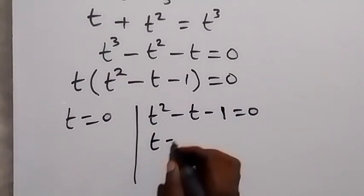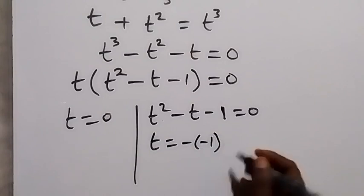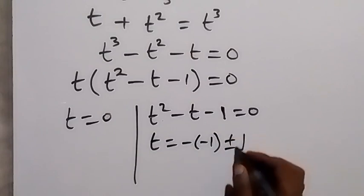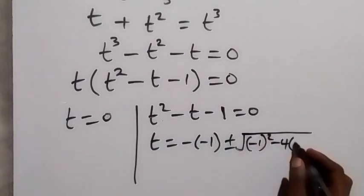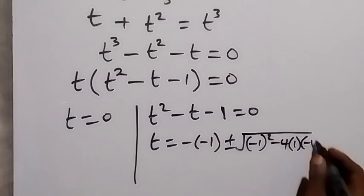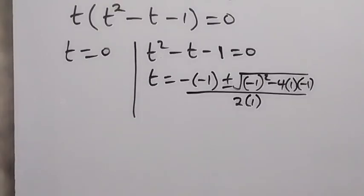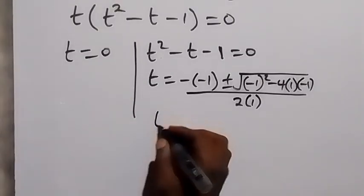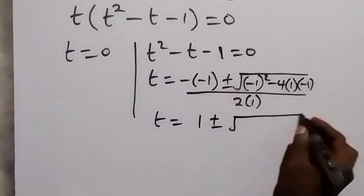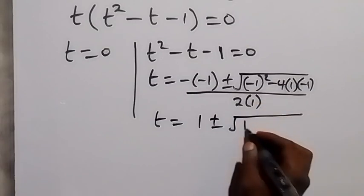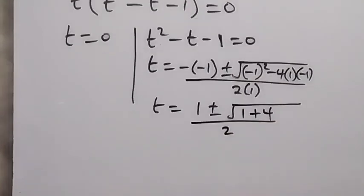So t equals negative b — that's negative negative one, where b is negative one — plus or minus square root of b squared minus 4ac, where a is one and c is negative one, all over 2a, which is 2 times 1. This gives us t equals one plus or minus square root of one plus four, all over two.